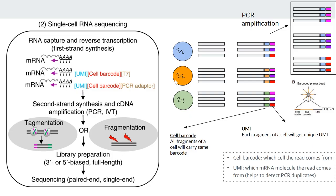Since our objective is to study each cell separately, we attach a unique barcode to each cell. In this example, let's say there are three cells — color-coded blue, yellow, and green. All RNA molecules in the blue cell get the blue barcode attached; the orange cell gets the orange barcode; the green cell gets the green barcode. This way we know that wherever the green barcode appears, those RNA fragments belong to the green cell. After the adapter, we add the cell barcode, which is generally a 12 base pair unique sequence.